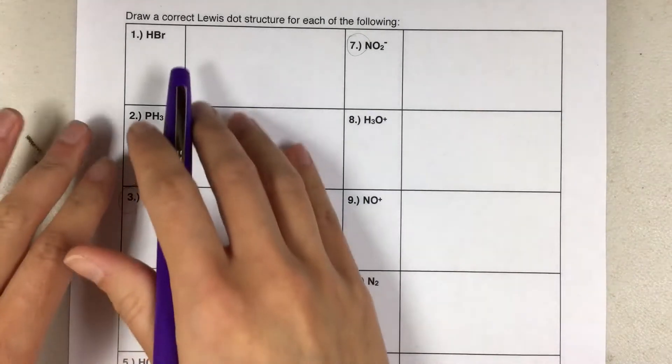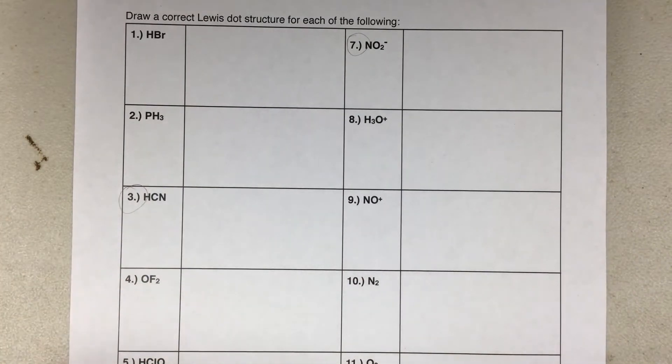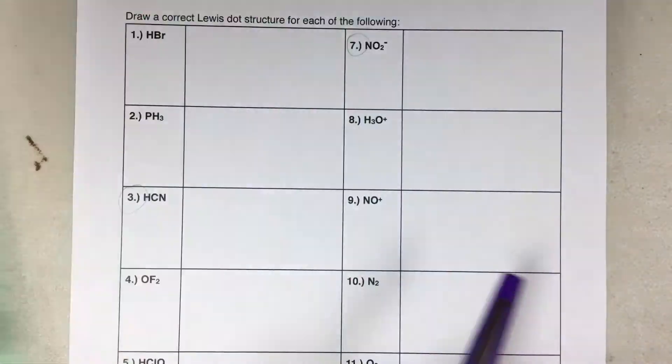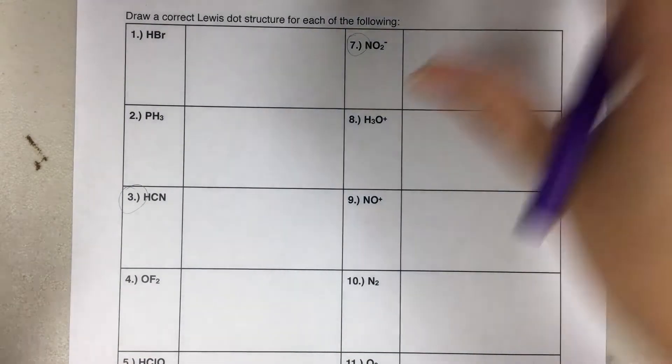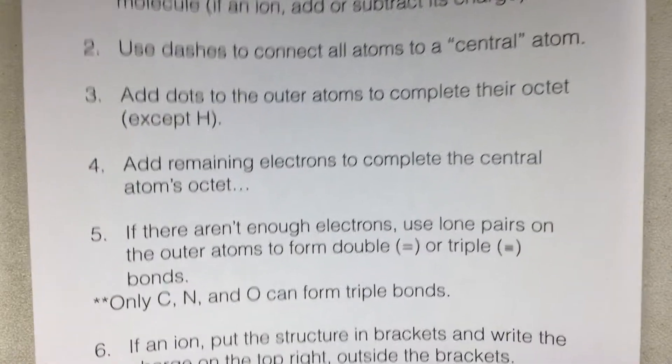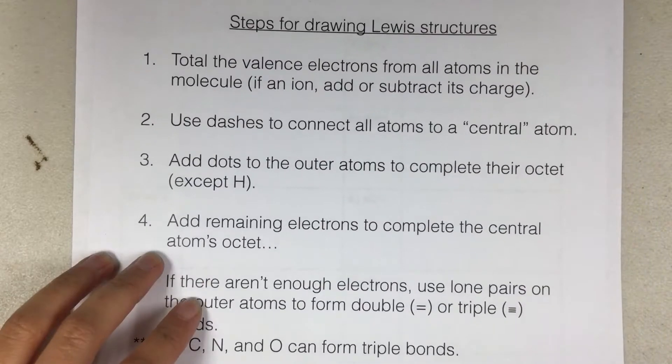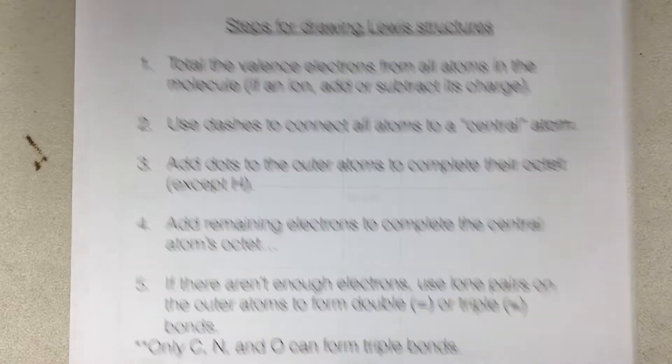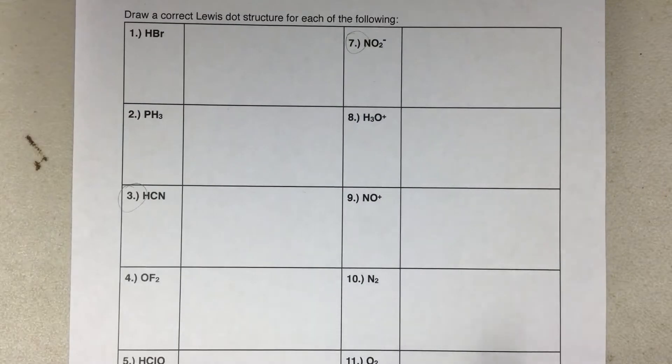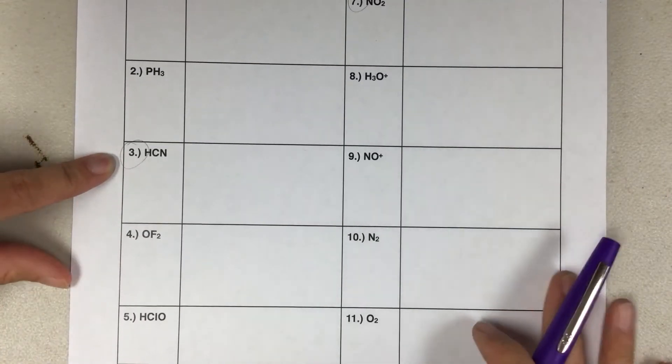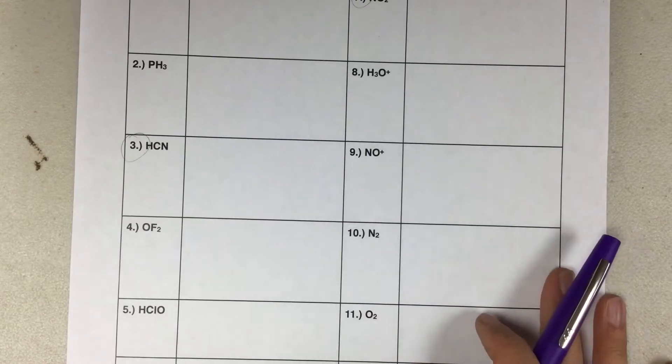This assignment is in your notebook, so you don't have this worksheet. I just have it to show you the problems and do a few of them for you. You'll copy these questions into your notebook and do it right in there. In order to do this, you'll need your periodic table because it involves figuring out valence electrons.